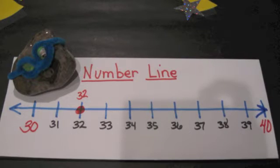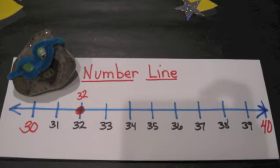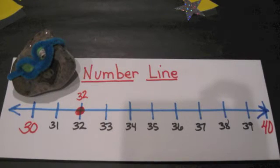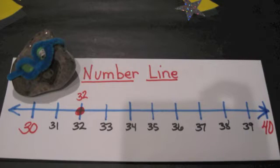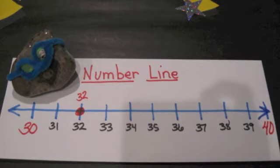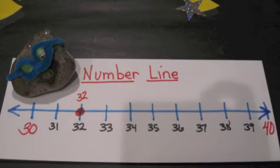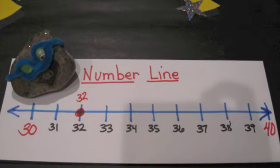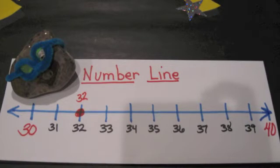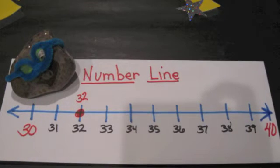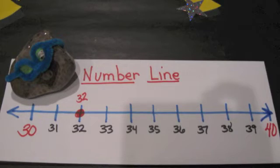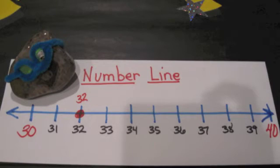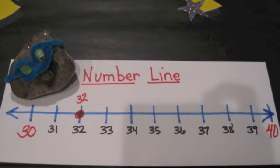Let's say we want to round the number 32 to the nearest ten. We look at the closest ten less than 32 and we see that it is 30 on the left. The closest ten greater than 32 is 40 and it is on the right. We put the number 32 in its proper spot on the number line and we can see that 32 is closer to 30. So 32 rounds down the number line to the number 30.